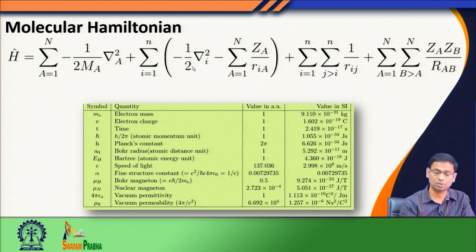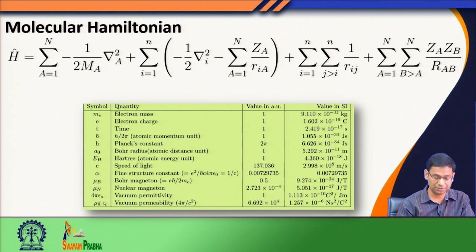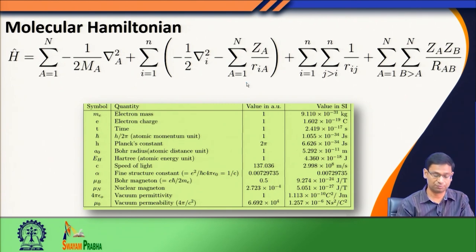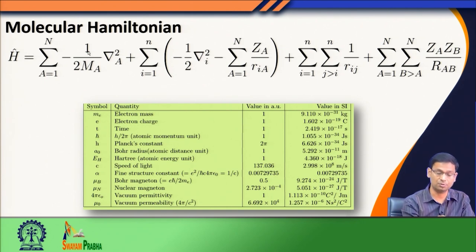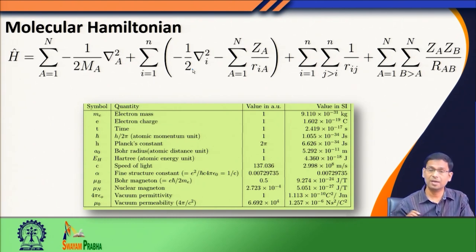Similarly, the mass of the electron which should have been in the kinetic energy operator of the electron has been made 1. The vacuum permittivity 4πε₀ also appears in all Coulomb interactions — electron-electron repulsion, nuclear-nuclear repulsion — in all these cases 4πε₀ has been made 1. Also ℏ, which should have been in the kinetic energy of the nucleus and the kinetic energy of the electron, has also been made 1. So the use of atomic units makes our molecular Hamiltonian rather simple, and from now onwards we will stick to writing the Hamiltonian in atomic units.